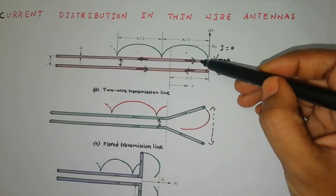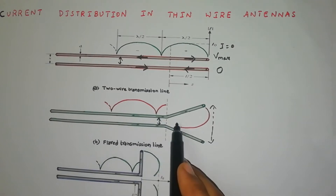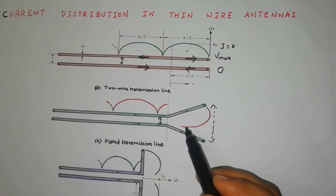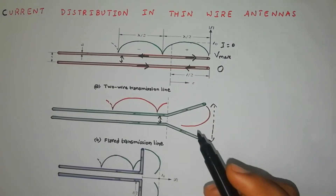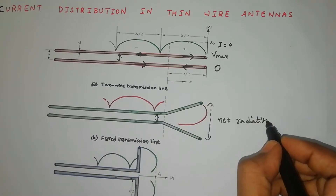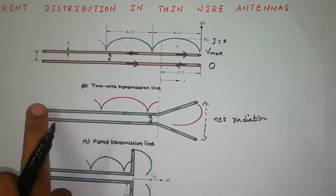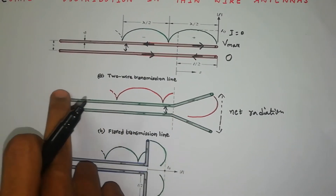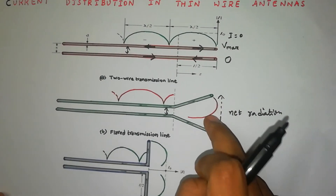In the straight parallel case, small separation causes the field to cancel. But in the flared transmission line, there is no chance of field cancellation. If you increase the separation more and more, the net radiation increases greatly. The current flows in one direction on one wire and returns on the other, and because of the difference in phases the fields will not get cancelled.